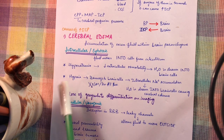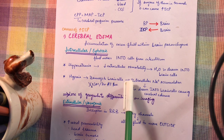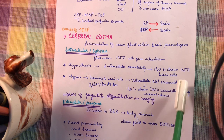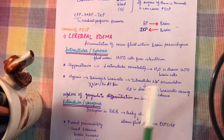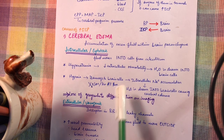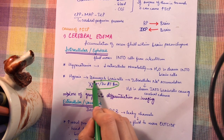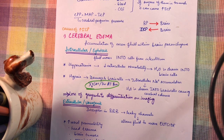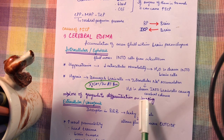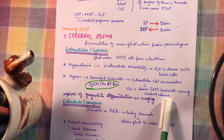Regarding toxins: if there is hyponatremia in the body, it leads to decreased extracellular osmolality, and water is drawn into the brain cells. If there is hypoxic injury to the cell, there is damage to the sodium-potassium ATPase, which leads to intracellular sodium accumulation, and again water is drawn into the brain cells, causing cerebral edema.